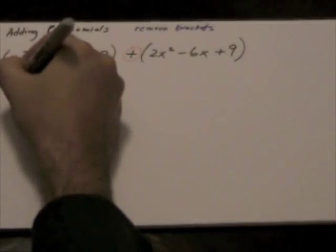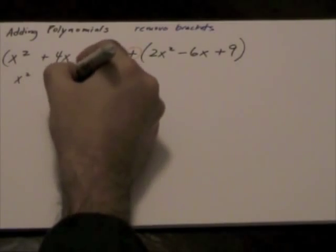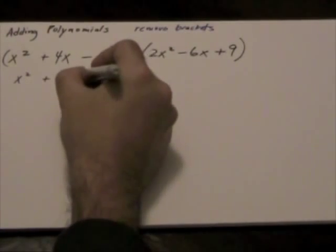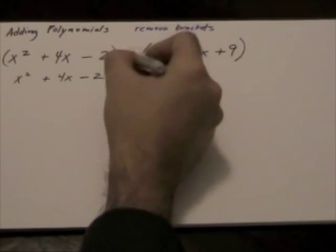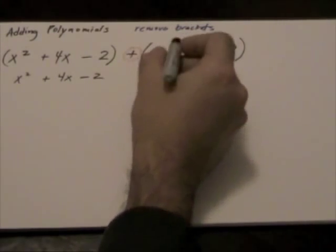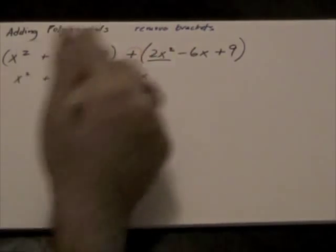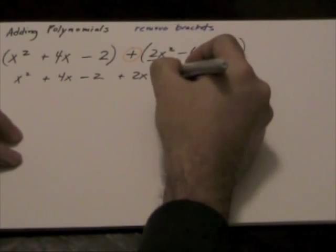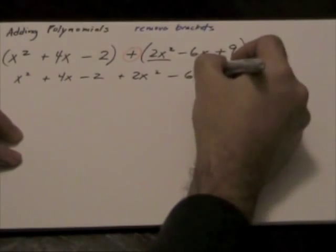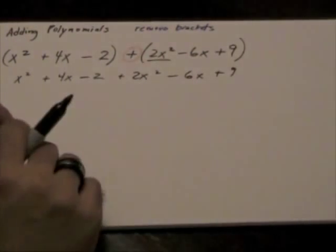In other words, we can rewrite this entire expression as follows: x squared plus 4x minus 2. So we can remove the brackets here. It's a positive 2x squared because, remember, the addition sign outside of the brackets does not change any of the value within the brackets. 2x squared minus 6x plus 9.